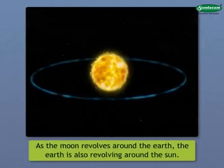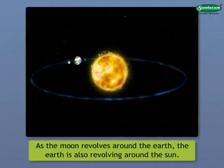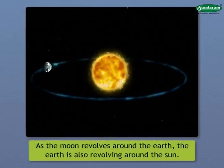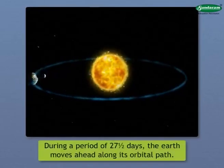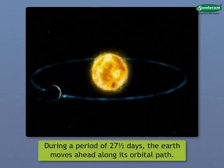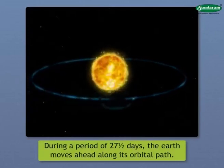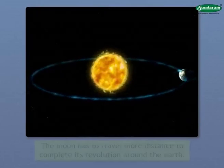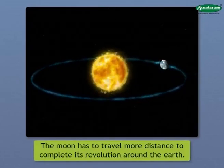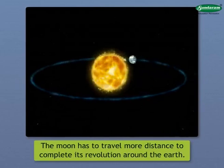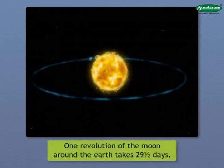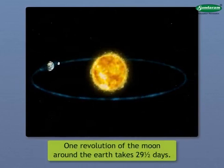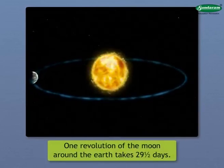As the Moon revolves around the Earth, the Earth is also revolving around the Sun. Hence, during a period of 27 and a half days, the Earth moves ahead along its orbital path. Therefore, the Moon has to travel more distance to complete its revolution around the Earth. Hence, one revolution of the Moon around the Earth takes 29 and a half days.